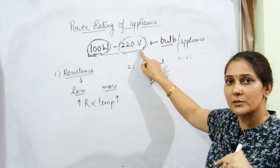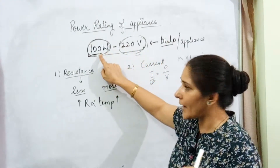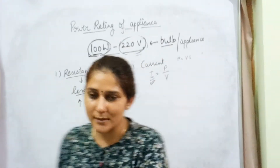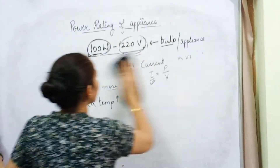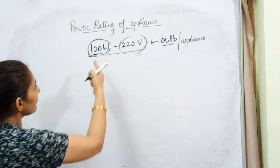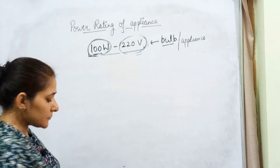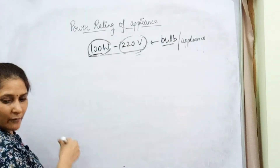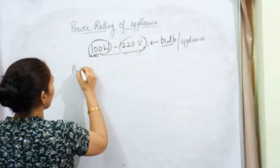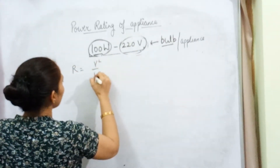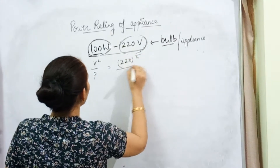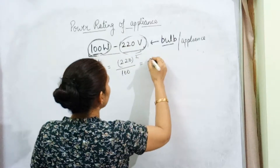If the value of the potential difference decreases, the power consumed by the appliance also decreases. To understand this, let me explain with the help of an example. If a bulb is rated this way, we can first calculate the resistance of this bulb — that is V² upon P, which is 220² upon 100.